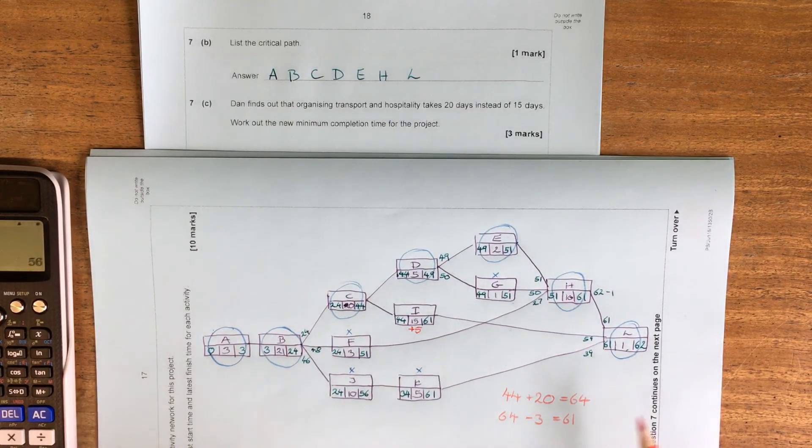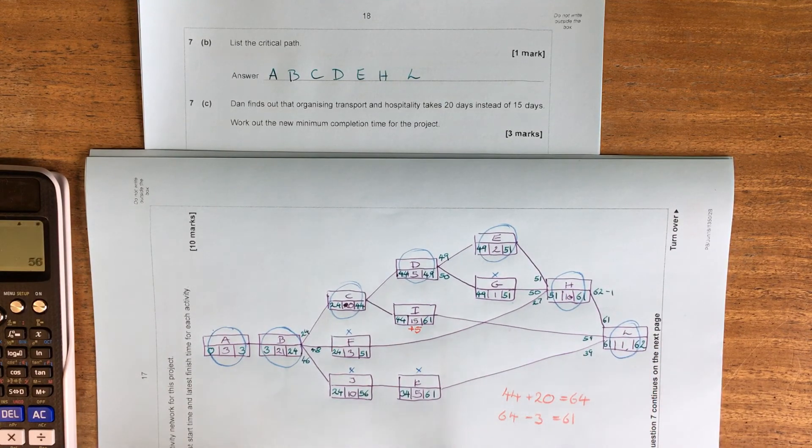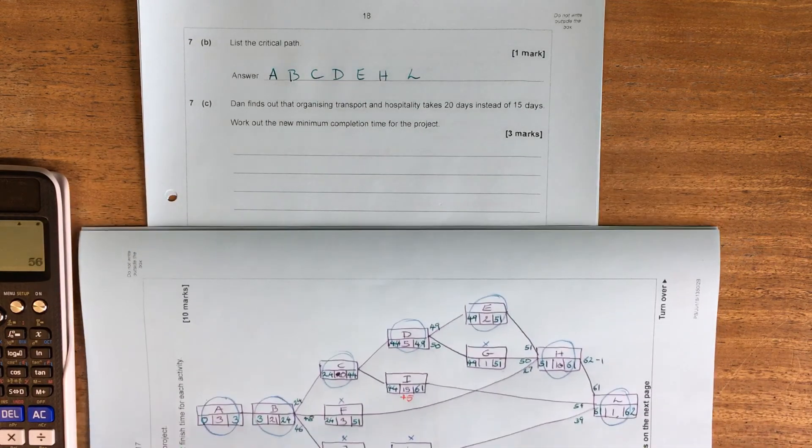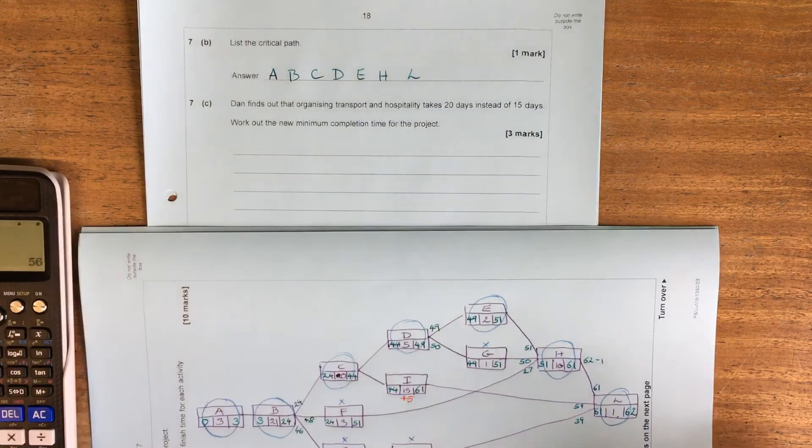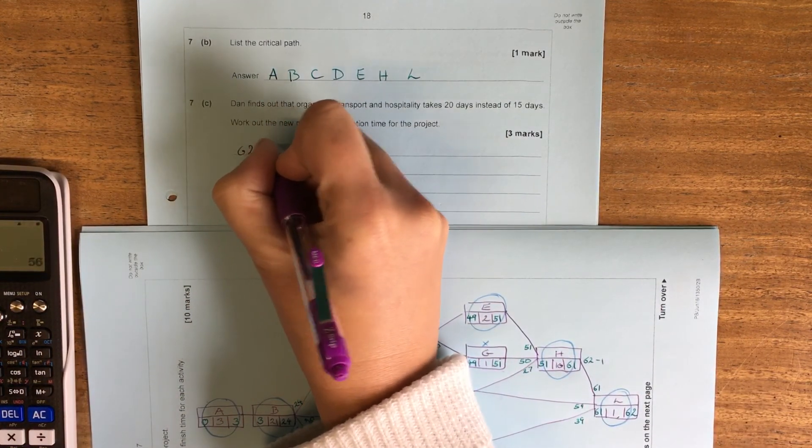So our new maximum completion time isn't going to be 62. It's going to be three days later. So we should have a new minimum completion time of 62 plus our three day delay, which gives us 65 days.